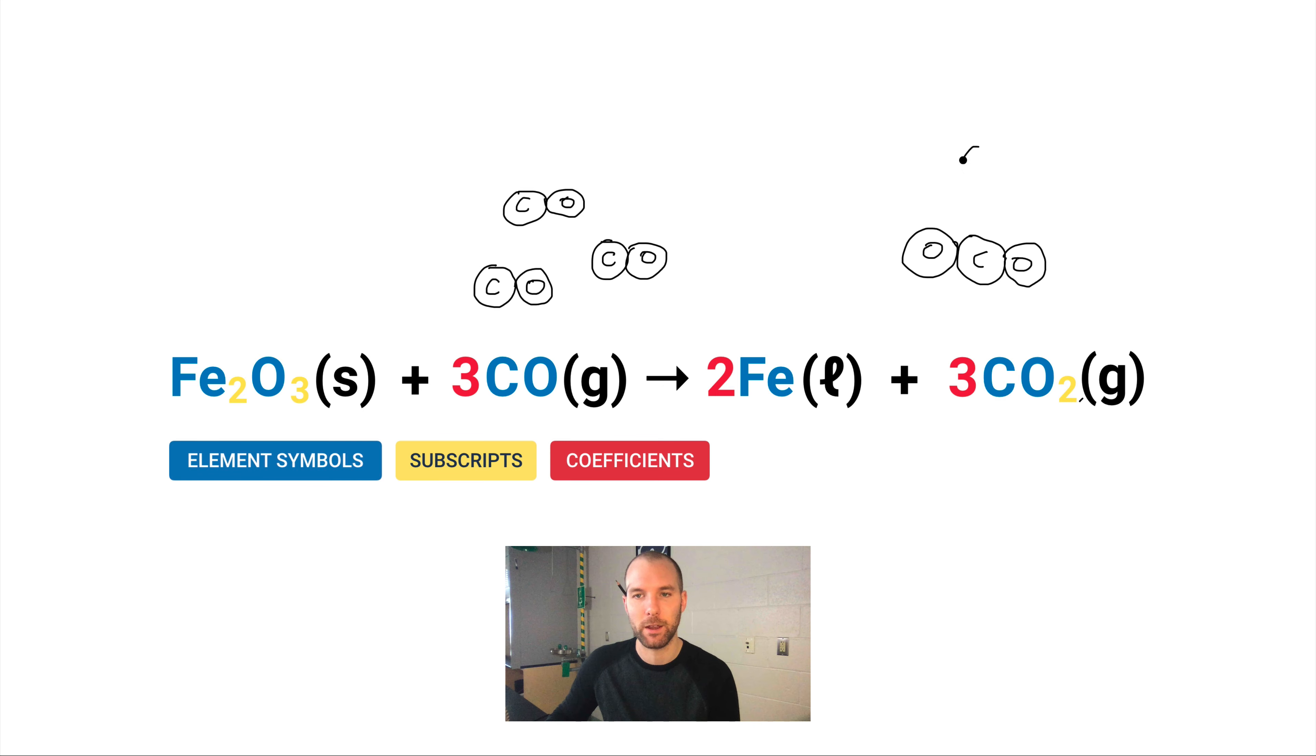A coefficient in front is kind of like a multiple. It's like saying there's X number of these, but they're all separate. So there's two, and if I draw out another O, C, O, that's what this here means. It means three separate distinct carbon dioxide molecules.